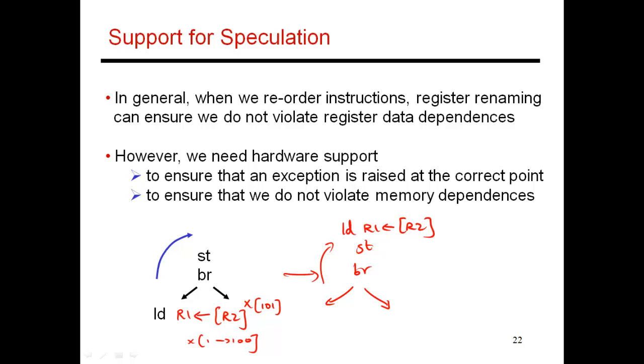Now, it's possible that the original program would not have crashed. Maybe what the branch is doing is checking to see if this access is in bounds. And if it's in bounds, then you go ahead and perform the load. Otherwise, you go along the other path. So the original program was written correctly. You were making sure that there was no segmentation fault. But if you move the load up, the segmentation fault is going to happen right here, and the program is going to terminate.